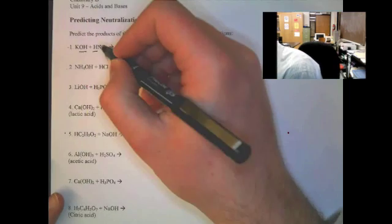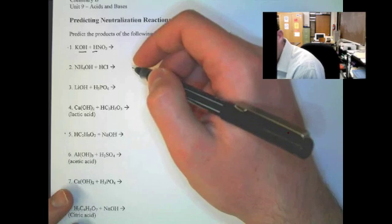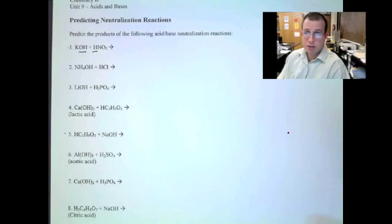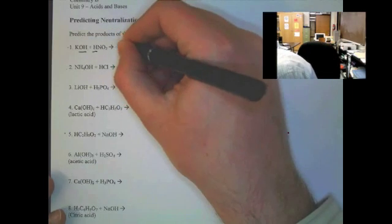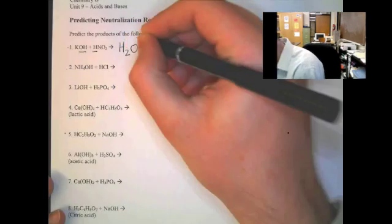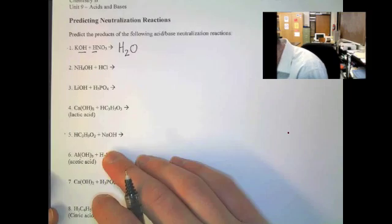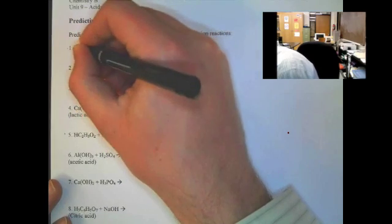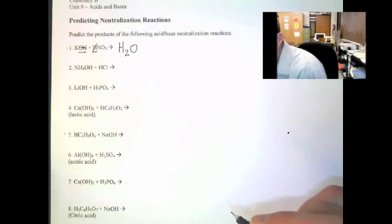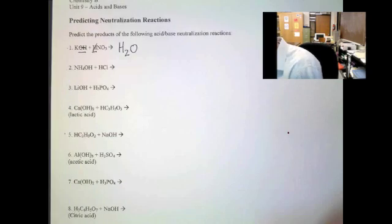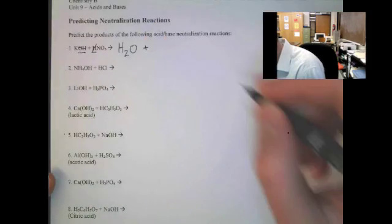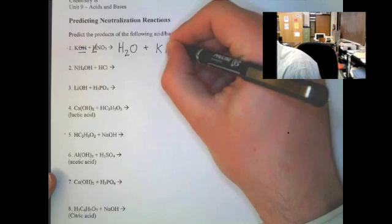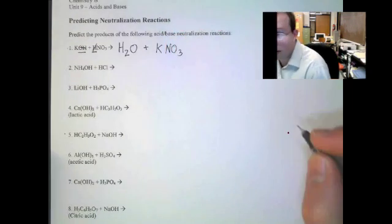So, potassium hydroxide plus nitric acid. The first product that we're going to see in a neutralization reaction every single time is going to be water, H2O. The way I think is simplest is to then physically cross off the H and the OH from the reaction, because now you can see what's left over. You're left with potassium and nitrate — KNO3.